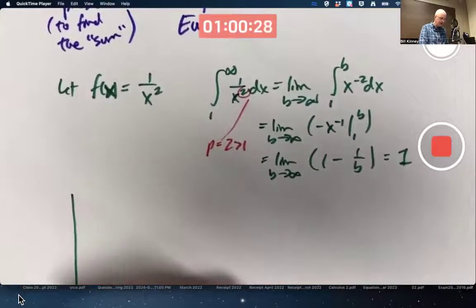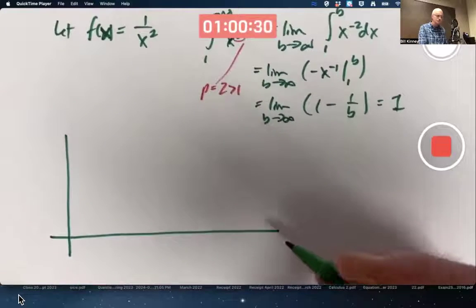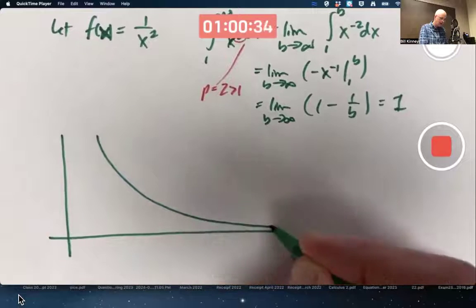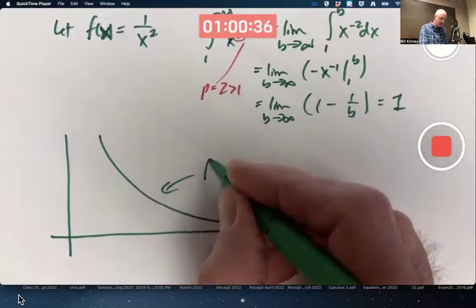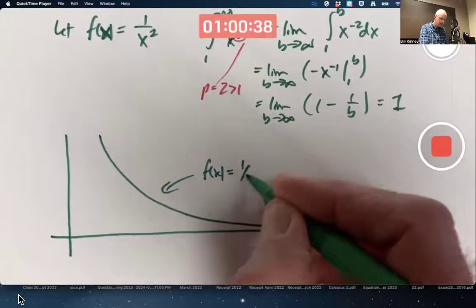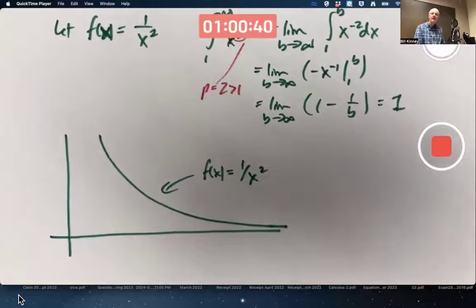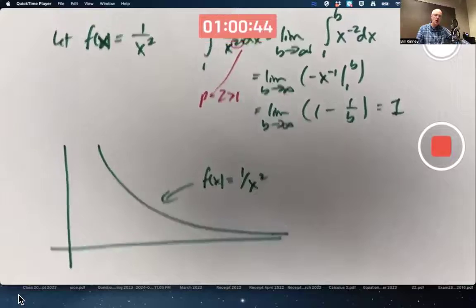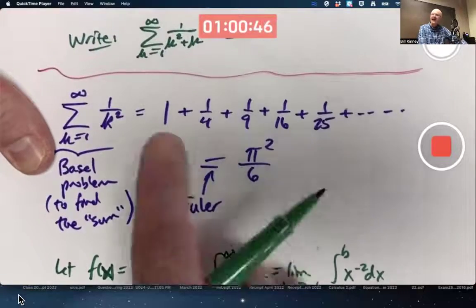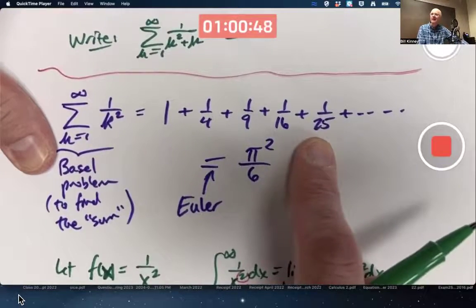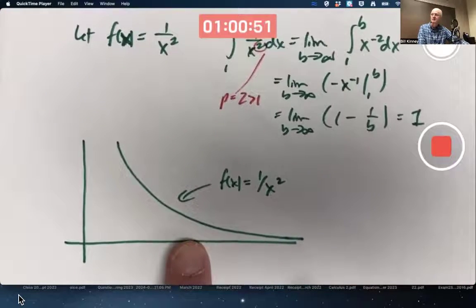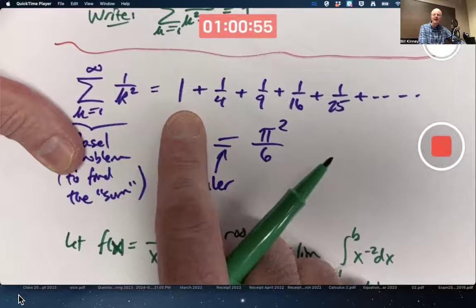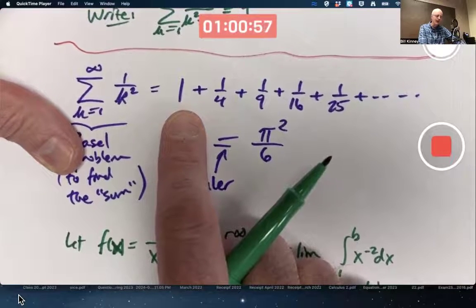We can relate this to the series in a graphical way. If I graph this function, 1 over x squared. f of x equals 1 over x squared. I can treat the terms of the series as areas of rectangles under this curve. Well, except for the first term.